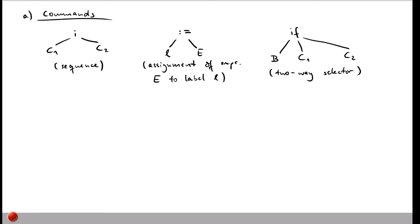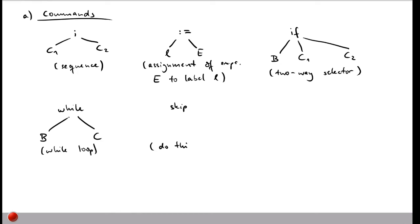SIMP also supports loops — specifically while loops. These are trees in the abstract syntax tree with a while node having two children: one for the boolean expression that determines whether we enter the loop, and a command c which is the body of the loop. Finally, the simplest kind of command is called 'skip', which does exactly what the name suggests — nothing. We need skip for defining the semantics of the language, to indicate that nothing has to be done anymore.